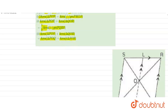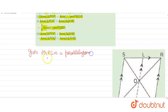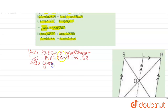Now let's start with our solution. We are given that PQRS is a parallelogram, which means PS is parallel to QR and PQ is parallel to SR, because a parallelogram is a figure in which two pairs of parallel lines are given. Also given that LM is parallel to PS, but PS is parallel to QR, which means LM is also parallel to QR.